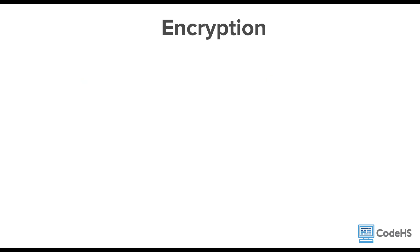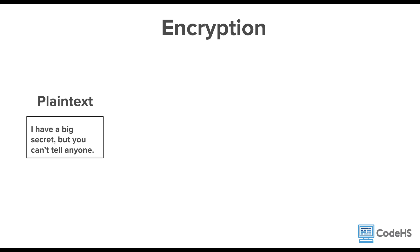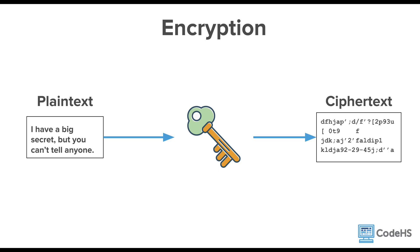Let's go over some of the words that are used when talking about encryption. You start with a readable message — this is called plain text. Anyone can read it easily. Then you encrypt the message using a key. A key is a value or variable that is used during encryption. The message cannot be decrypted or unscrambled without knowing this key. The message that results from encryption is called ciphertext. This cannot be read unless you decrypt it using the key. If you use the encryption and key to change plain text to ciphertext, this is called encryption. If you reverse the process and go from ciphertext to plaintext, it's called decryption. And you can only do this if you know the key.